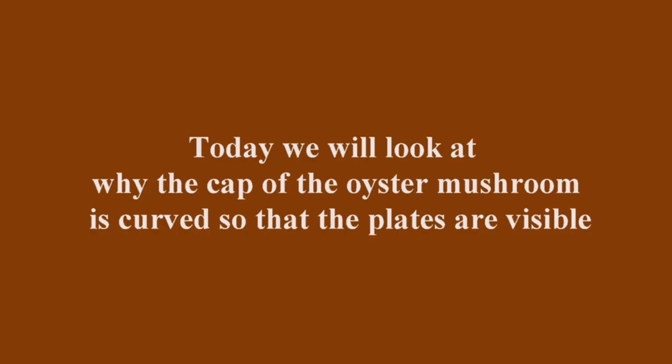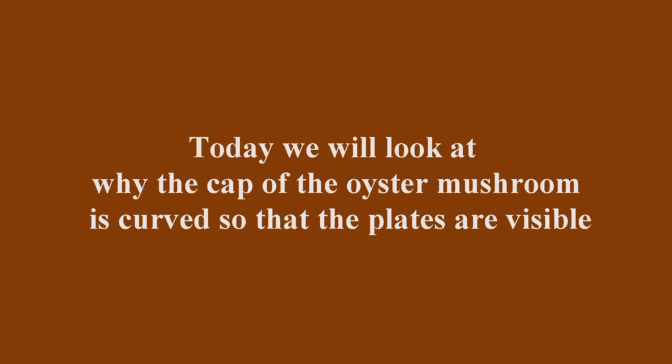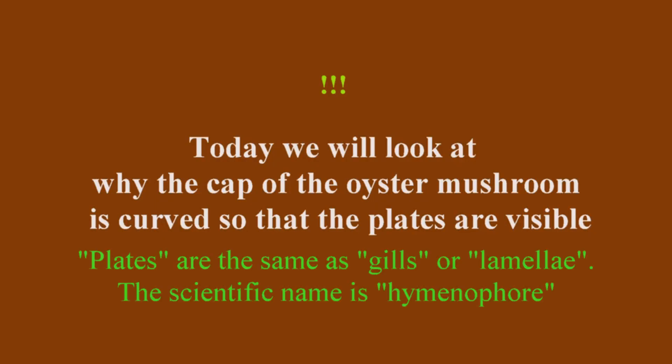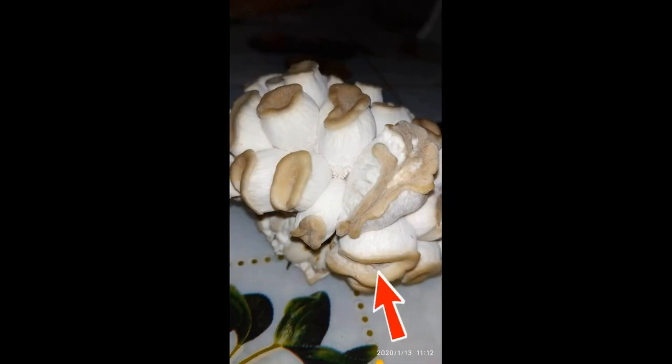Today we will look at why the cap of the oyster mushroom is curved so that the plates are visible. This happens in three cases. First, the mushroom has overgrown, lightened, and opens its plates — it rolls up the cap to throw out spores. Second, there is high humidity in the room; the mushroom rolls up the cap and opens the plates to release moisture, increasing the surface for evaporation.